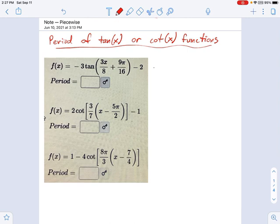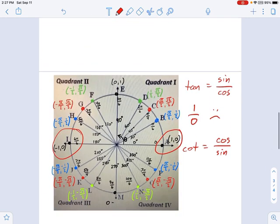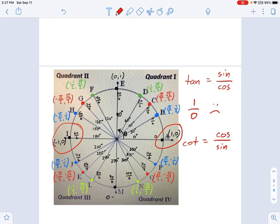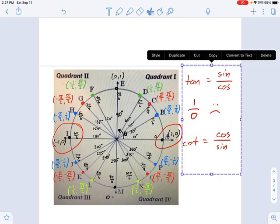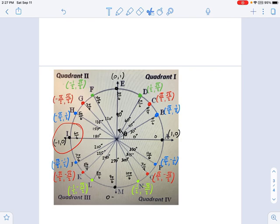If you remember from the unit circle, we've got this unit circle here, and the period talks about how long it takes for the function to repeat itself. With the sine and cosine, if you remember, you have to go all the way around the circle before it repeats itself.